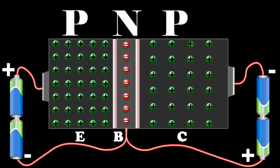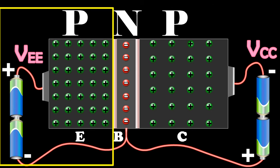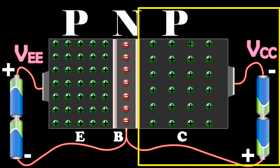The external biasing of the junction is provided by the batteries VEE and VCC as shown in the diagram. The emitter base junction is forward biased and the collector base junction is reverse biased.